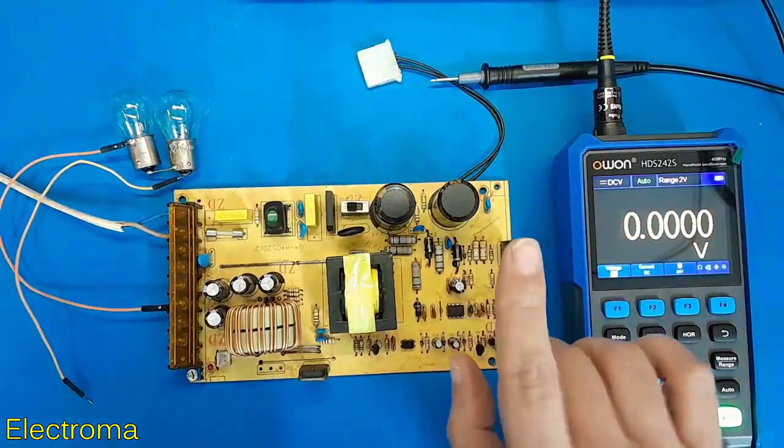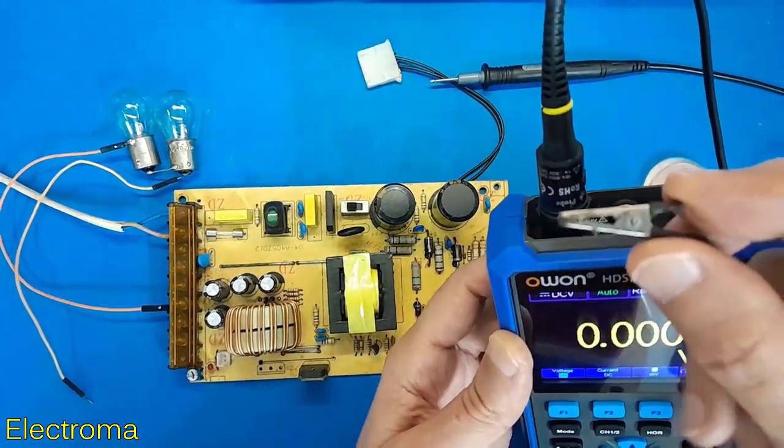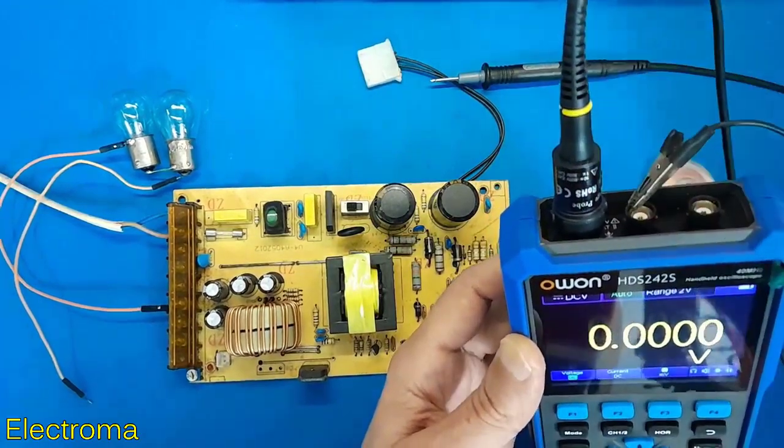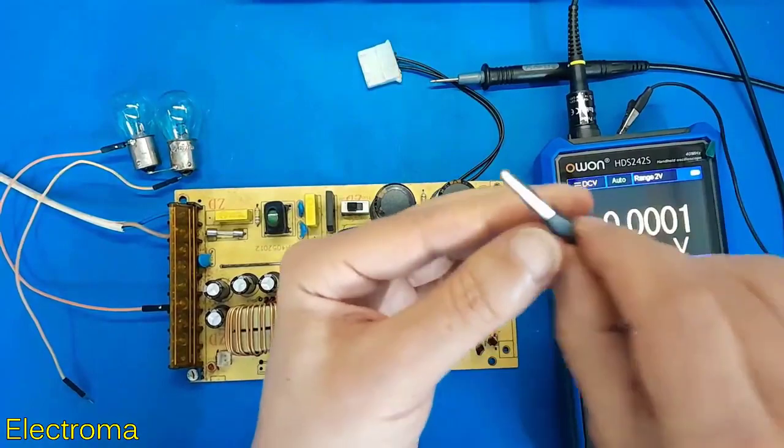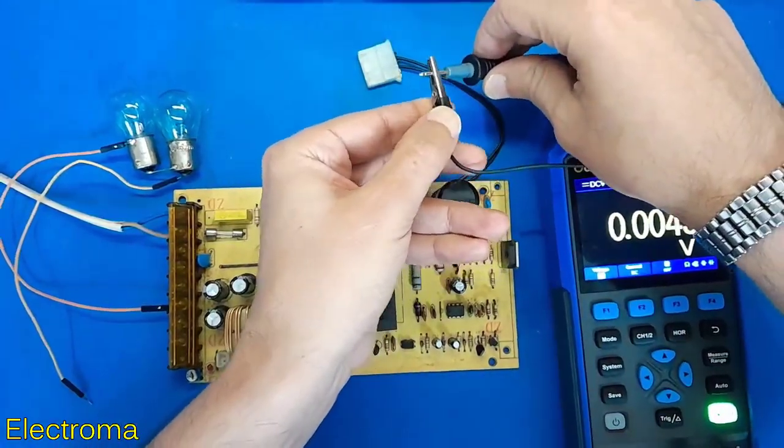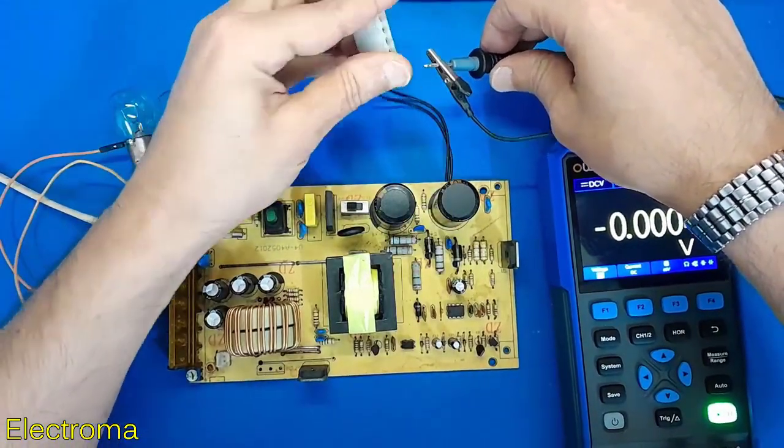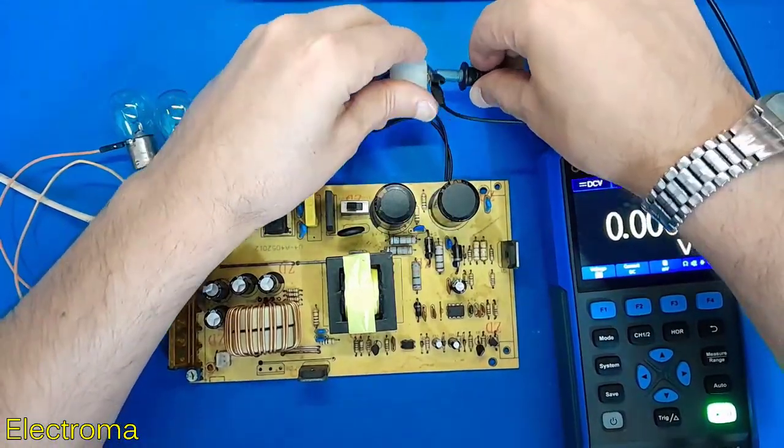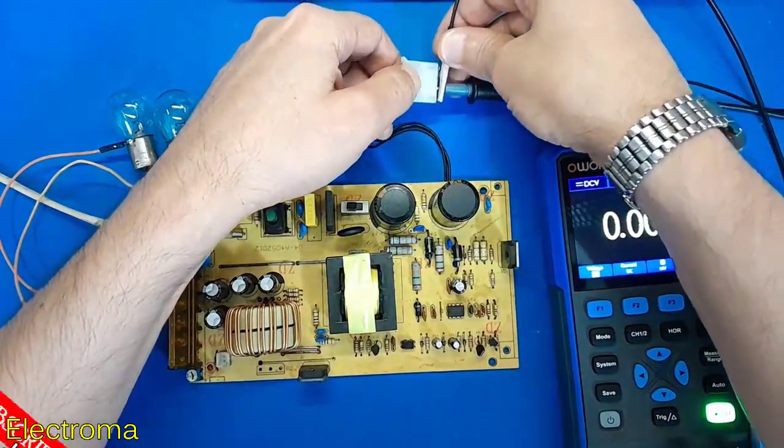But to connect the negative of the oscilloscope to the circuit, connect the alligator clip to the second probe negative and I connect the other side of the alligator clip to the negative of the multimeter and then connect into the connector. This connector is connected to the negative of the capacitor.